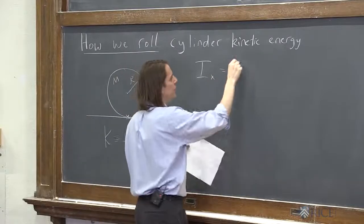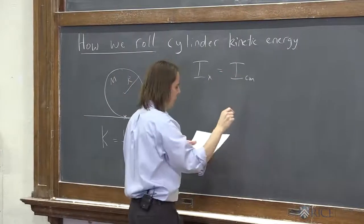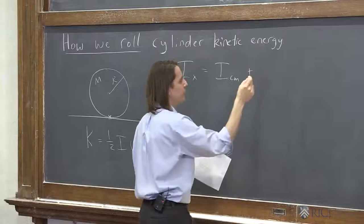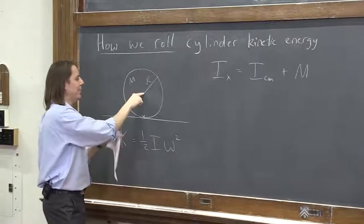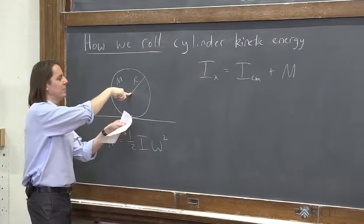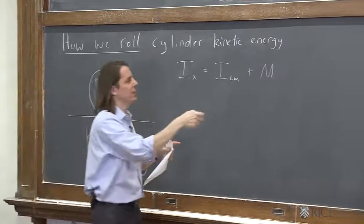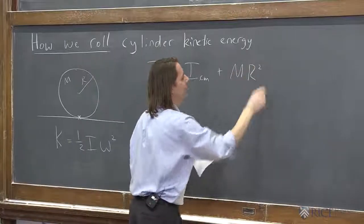is equal to the moment around the center of mass. That would be 1/2 m r² for a cylinder, plus m. And then it's the separation between the center of mass and the rotation axis, which in this case happens to be the radius again, because that's how we roll.